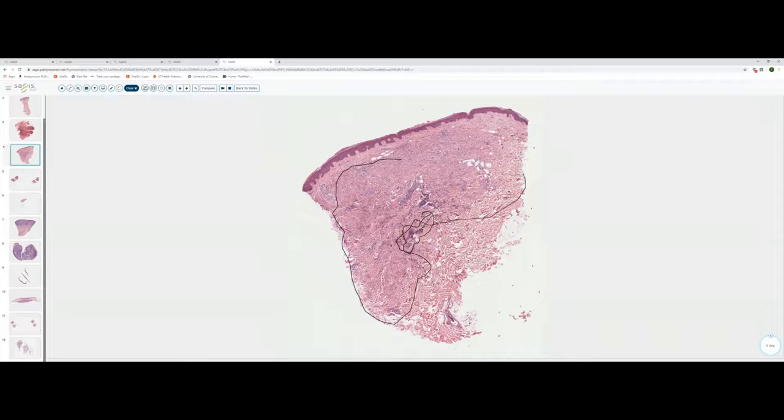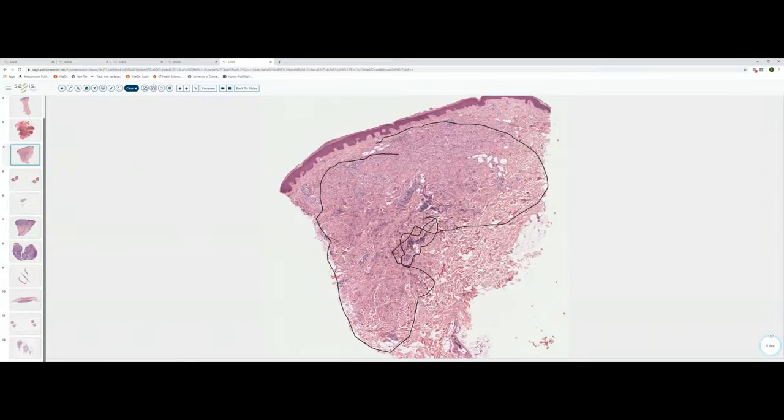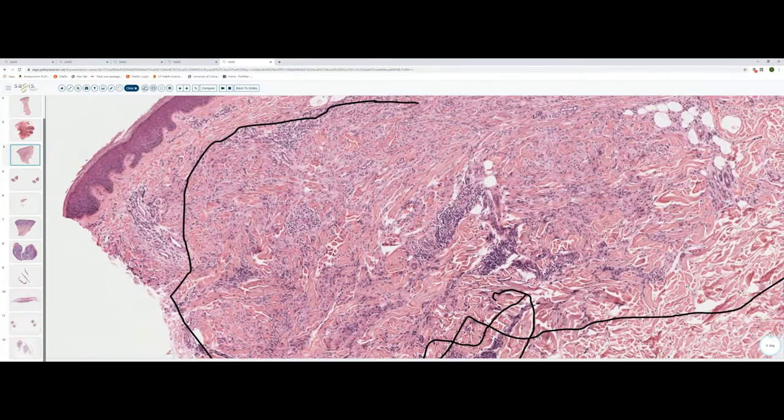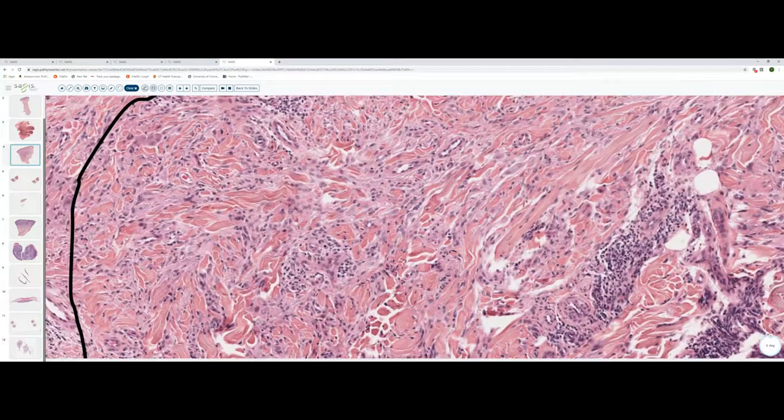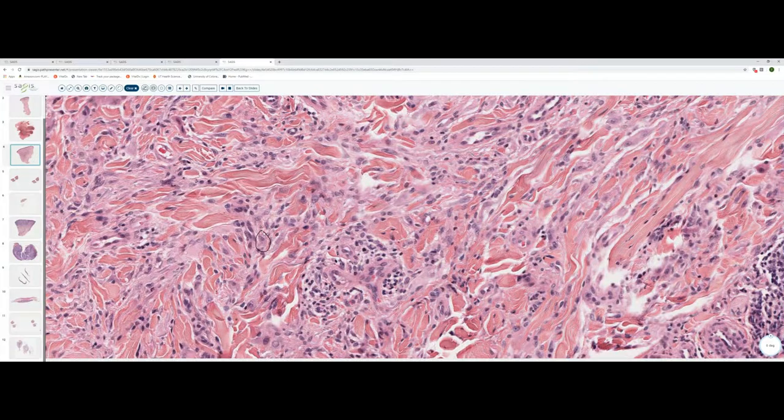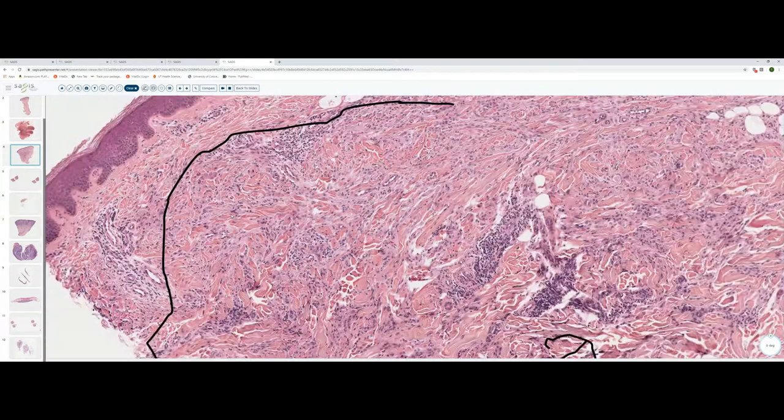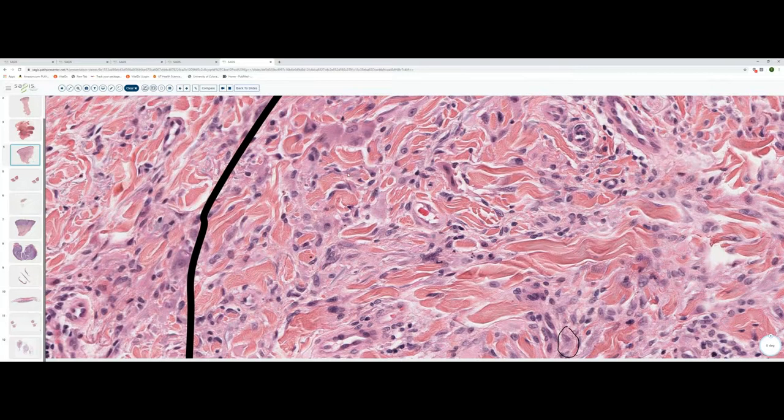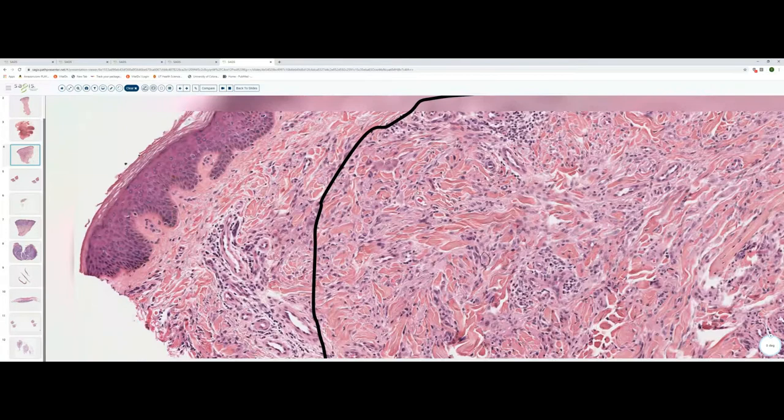In other words, they have more cytoplasm. The epidermis appears uninvolved. And as we move to higher power, we can see that these cells have round to oval nuclei and fairly abundant pink to slightly clear stained cytoplasm. The cells are arranged interstitially between collagen bundles. And in some areas, there's a slight increase in the amount of mucin present between the collagen bundles. And this is an example of GA, granuloma annulare.